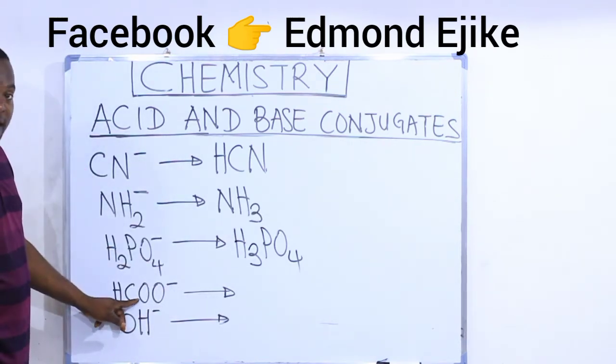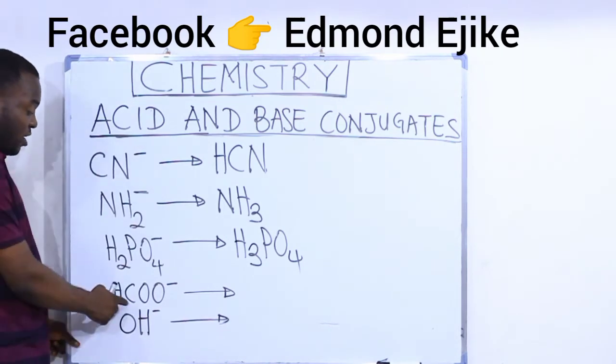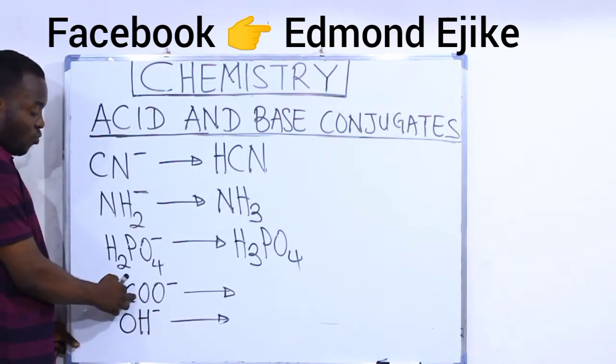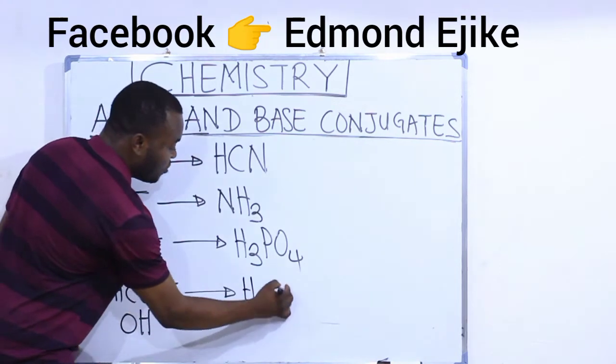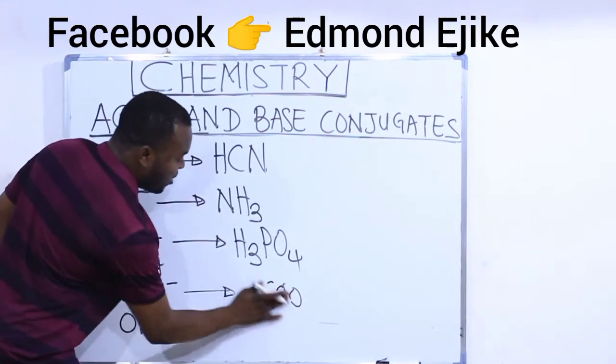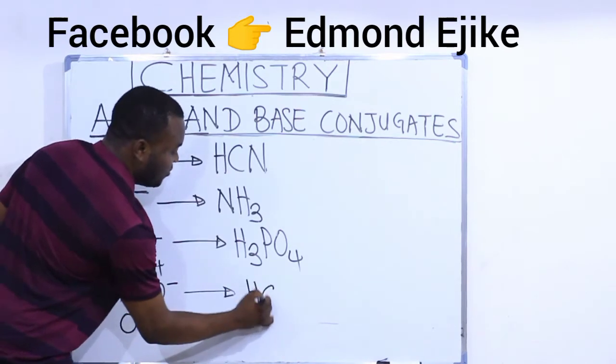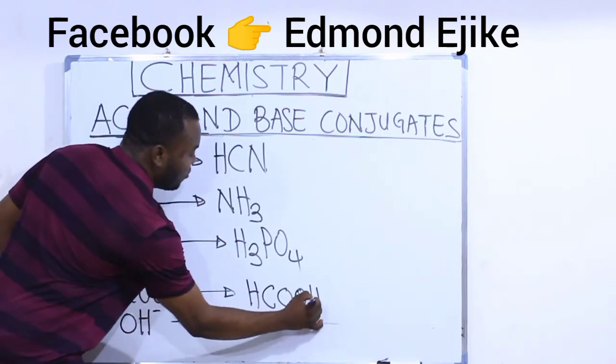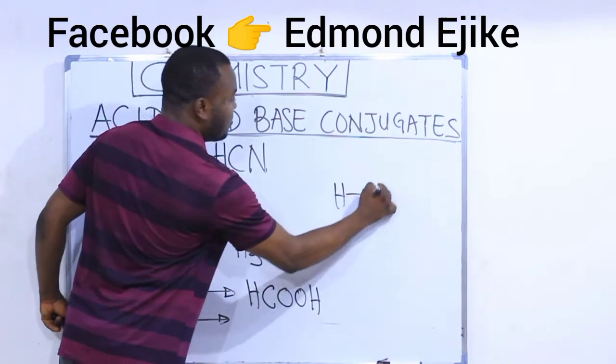To find the conjugate acid of this, I will add one H to this substance. And if I add one H here, I will have H2COO. But to write it better, you can write it this way. HCOOH. I think this is methanoic acid, like this.